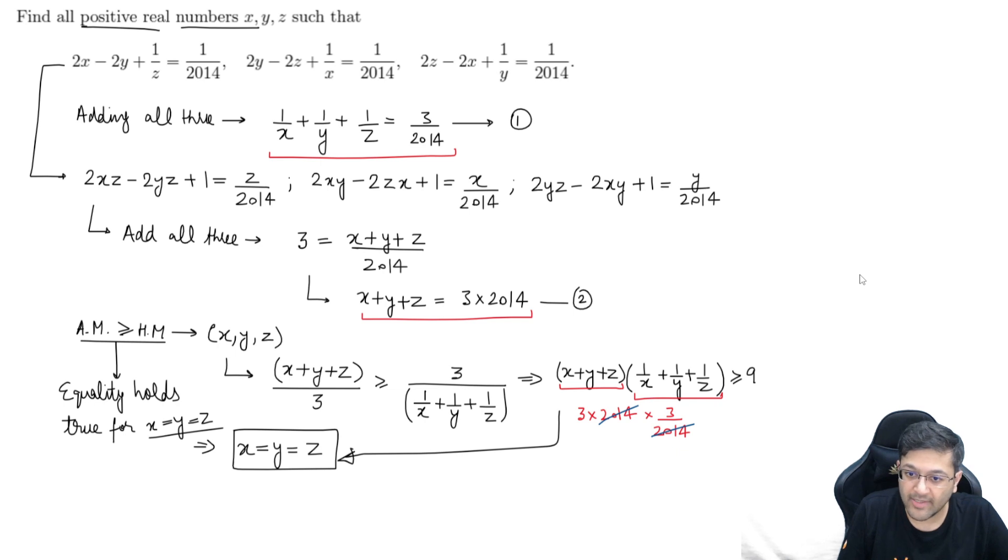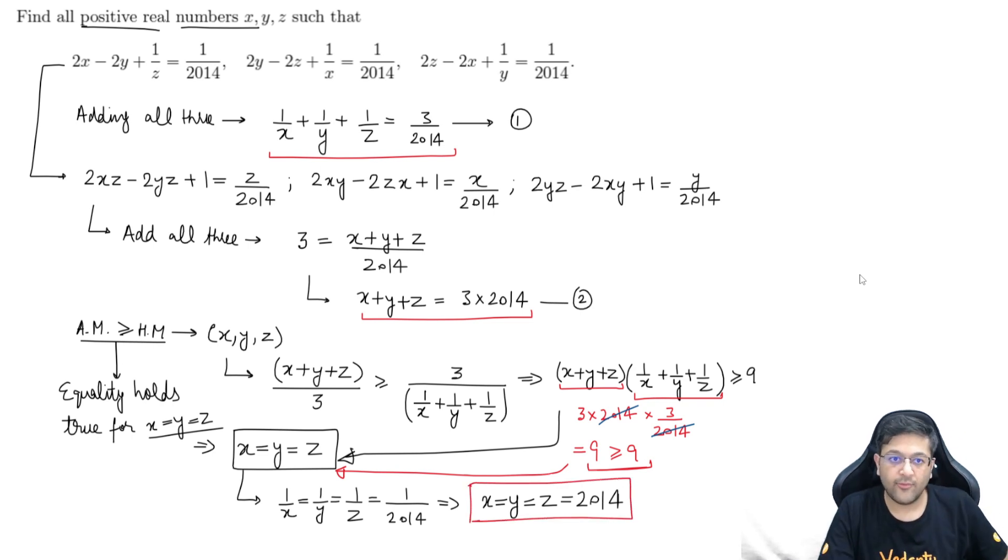So 9 equal to 9 hai, this value is 9 and you are getting it to be greater than equal to 9. So that will ensure that x equal to y equal to z hona chahiye and using that, if you put it in any one of the equation, if x, y and z are equal, those will get cancelled, you will actually get this thing, that 1 upon x equal to 1 upon y equal to 1 upon z, you are getting to be 1 upon 2014 or in other words, you are getting x equal to y equal to z equal to 2014. So that is your final answer, only one set of solutions for these three equations, for three given equations and the solution is all three of them are equal, all the three variables x, y, z have to be equal and they have to be equal to 2014 to satisfy the given set of equations.